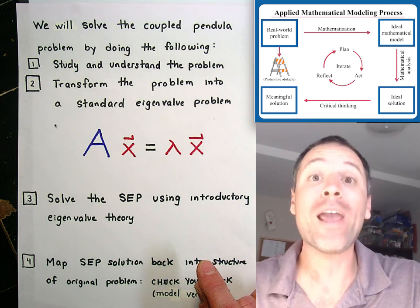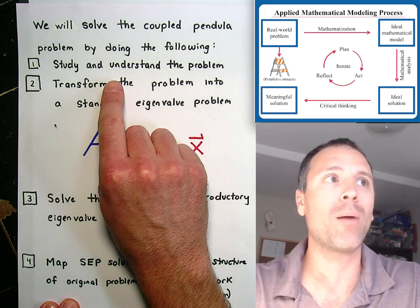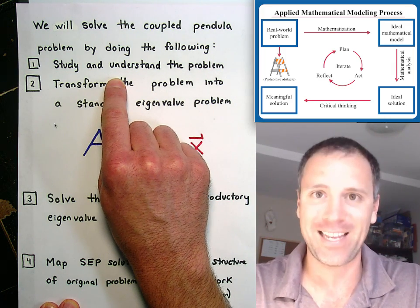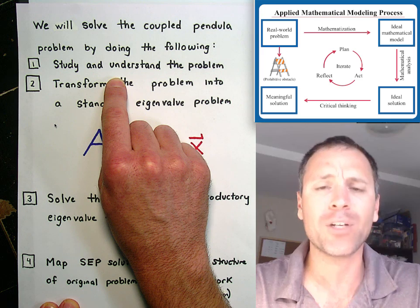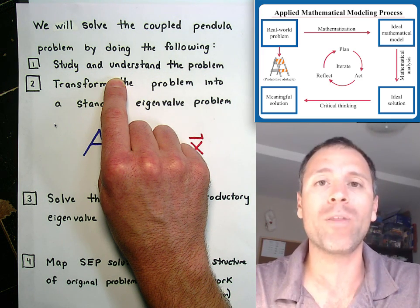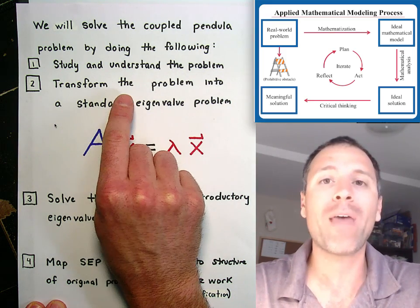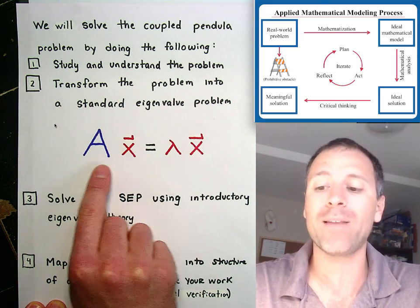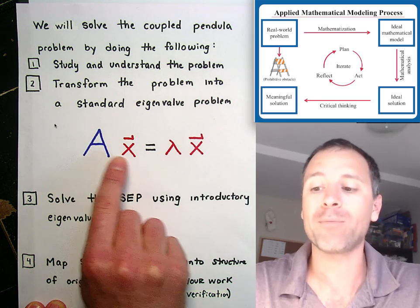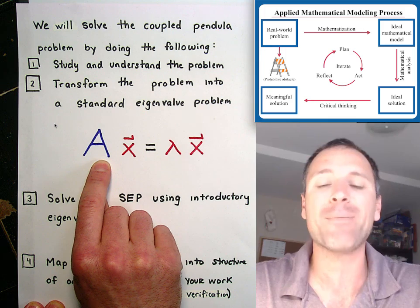With that in mind, by way of our introduction to the standard eigenvalue problem, we're going to take our real world problem, study it and understand it. That takes time. It takes a lot of time to be able to understand and state a meaningful problem in the world around us. Once we do that, we're going to learn how to transform that problem into a mathematical statement that looks like a matrix times a vector equals lambda times that vector. That matrix will encapsulate the dynamics of the system.